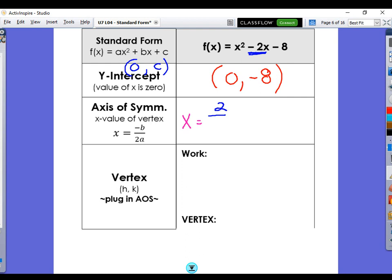So positive 2 over 2 times a. Well, 2 times a is just 2 times 1. So in this case, it's just 2 over 2, which means it's 1. Remember, that's such an important number that we call it h. So that's my h. We found our axis of symmetry and our h.